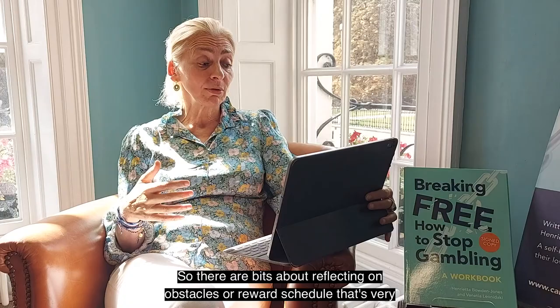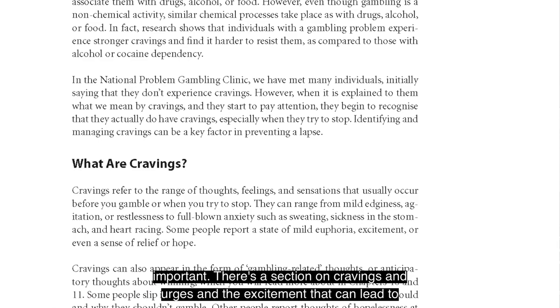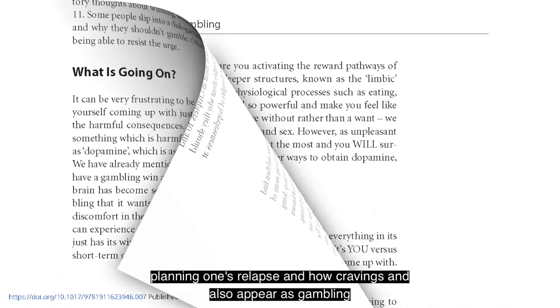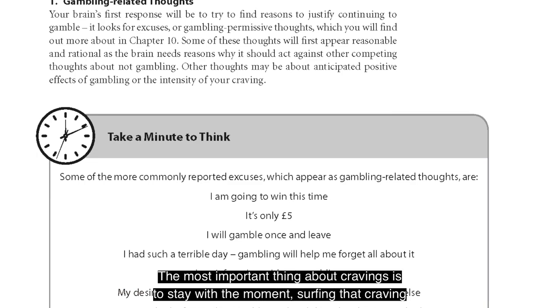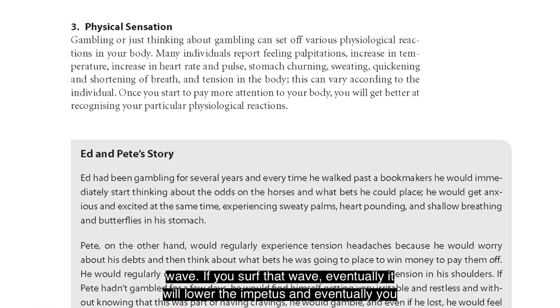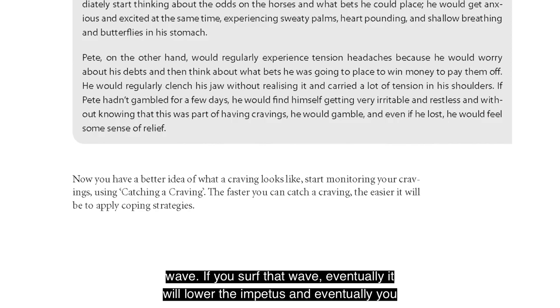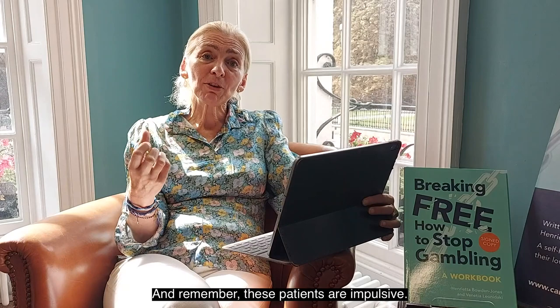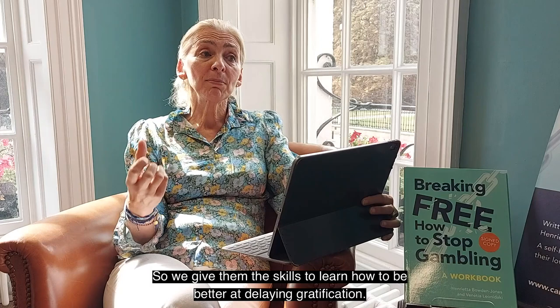There's a section on cravings and urges, and the excitement that can lead to planning a relapse. Cravings can also appear as gambling-related thoughts. The most important thing about cravings is to stay with the moment — surfing that craving wave. If you surf that wave, eventually it will lower the impetus and you will be able to overcome the craving. Remember, these patients are impulsive and not good at delayed gratification, so we give them the skills to learn how to delay gratification better.